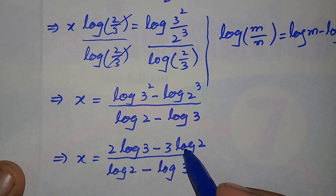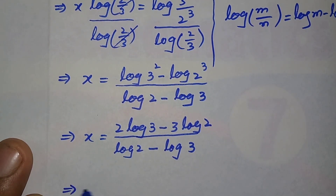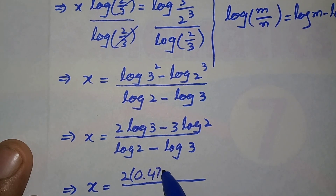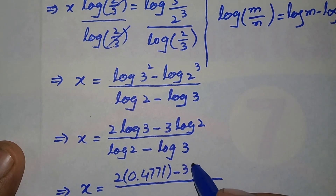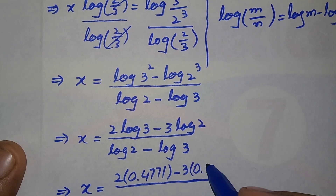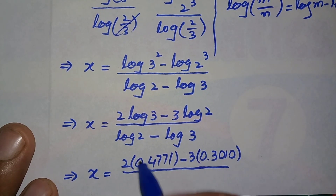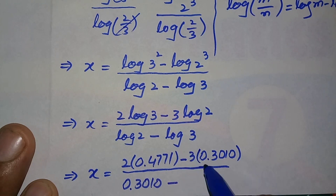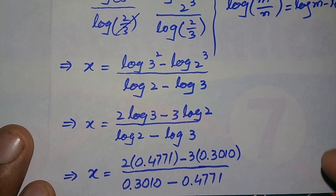In the next step we put the values of log 3 and log 2 from the log table or calculator. So it becomes: x equals 2 times 0.4771 minus 3 times 0.3010, divided by 0.3010 minus 0.4771.